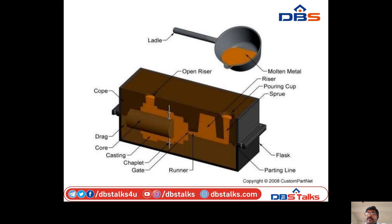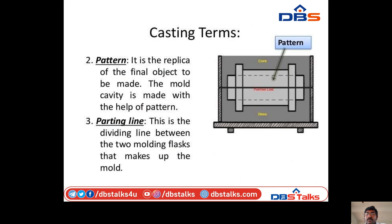Elements of casting: first, pattern — a pattern is a replica of the final object to be made; the mold cavity is made with the help of the pattern. Parting line — this is the dividing line between the two mold halves (cope and drag) that make up the mold.